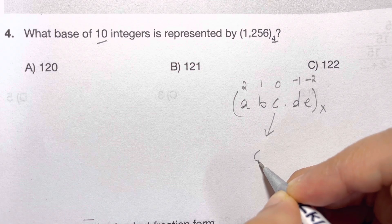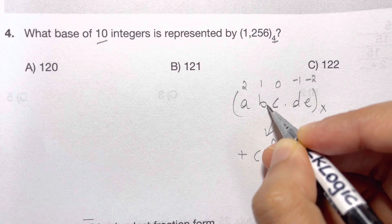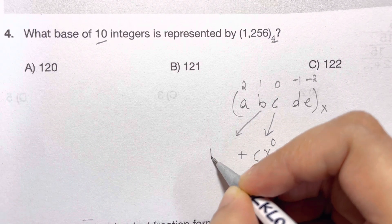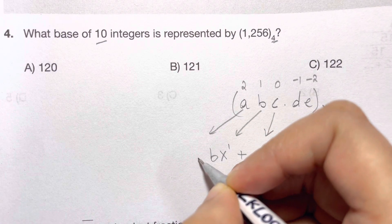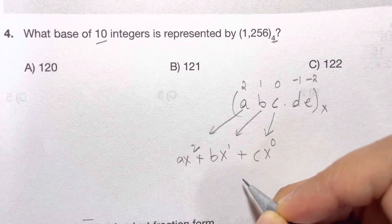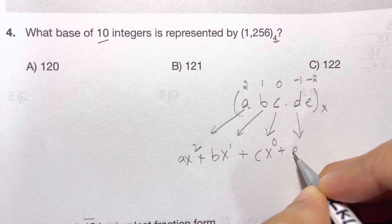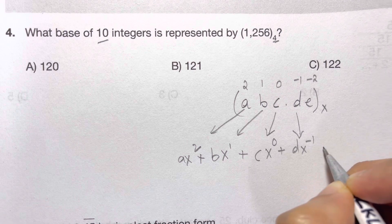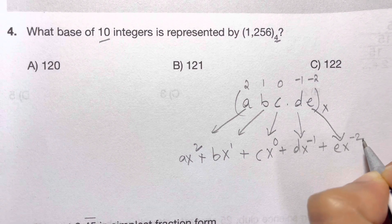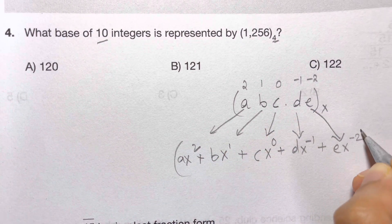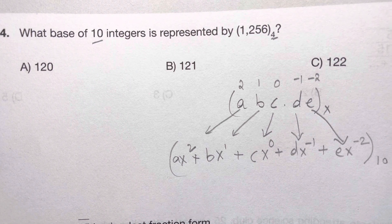You write it with C times X to the power of 0 and B times X to the power of 1 and A times X to the power of 2. And this side will be plus D times X to the power of negative 1 plus A times X to the power of negative 2 and this whole is converted to the base of 10. So this is how we convert it to the base of 10.